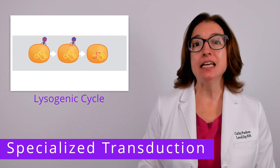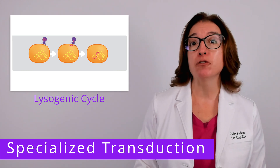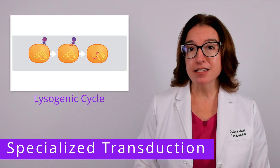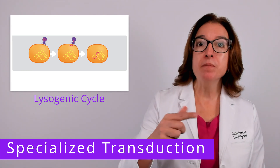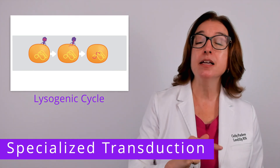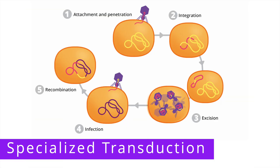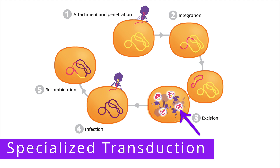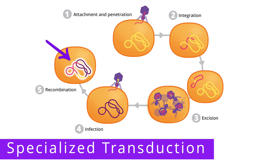The other main type of transduction is specialized transduction, which occurs during the lysogenic cycle of viral replication. As a review, during the lysogenic cycle, the bacteriophage attaches to the bacterial cell, injects its genome into the cell, and that genome is incorporated into the host cell's chromosome, forming a prophage. With specialized transduction, when induction occurs and the prophage is excised or cut out of the cell's chromosome, sometimes bacterial genes next to the phage DNA are also accidentally cut out. Then when the phage replicates its DNA and assembles new viral particles, the genome containing viral genes and bacterial genes gets packaged into the capsids. Those new viruses containing the combined genomes are released and go on to infect new bacterial cells, and the bacterial genes from the original bacterium are incorporated into the new bacterium.